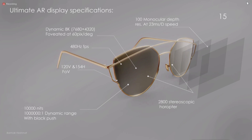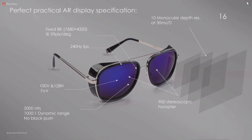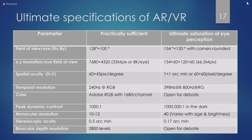The ultimate AR specs are: something around 8K per eye; around 100 monocular depth levels — that's a complete overkill, fully saturating human vision; 2,800 stereoscopic horopters, which are the stereoscopic depth levels; 10,000 nits, as bright as daylight; and a 1-to-1-million dynamic range — crazy numbers. This would be indistinguishable from reality. More practical numbers are also detailed in these slides — the ultimate practical specifications of an augmented reality headset.